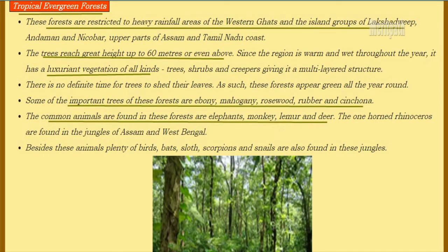Tropical evergreen forests are restricted to heavy rainfall areas of the Western Ghats and islands of Lakshadweep, Andaman and Nicobar, upper parts of Assam, and Tamil Nadu coast. Trees reach up to a height of 60 meters or more. The region is always warm and wet throughout the year. It has luxuriant vegetation of all kinds — trees, shrubs and creepers — giving it a multi-layer structure. There is no definite time to shed leaves, so forests appear green all year. Important trees found here are Ebony, Mahogany, Rosewood, Rubber and Cinchona.